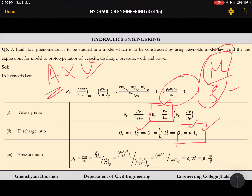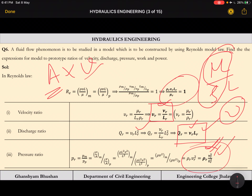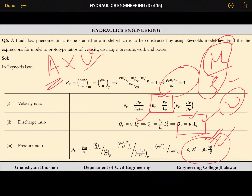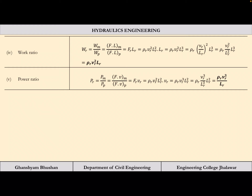For pressure ratio: pressure equals force per area. Viscous force scales as rho * L² * V² / L² = rho * V², so pressure ratio Pr = rho_r * Vr². Substituting Vr = nu_r / Lr, we get Pr = rho_r * nu_r² / Lr². These calculations are straightforward — just manipulate the data according to what the question requires.